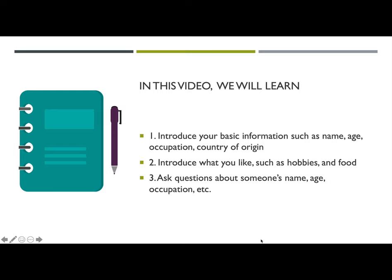In this video we will first learn how to introduce your basic information such as name, age, occupation, and country of origin. Second, we will learn how to introduce what you like, such as your hobbies and your favorite food, and we will go over example vocabularies as we go through the sentences. Finally, we will learn how to ask questions about someone's name, age, occupations, and hobbies. Are you ready? Let's get started!